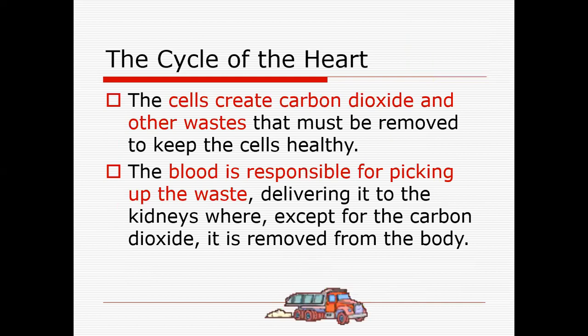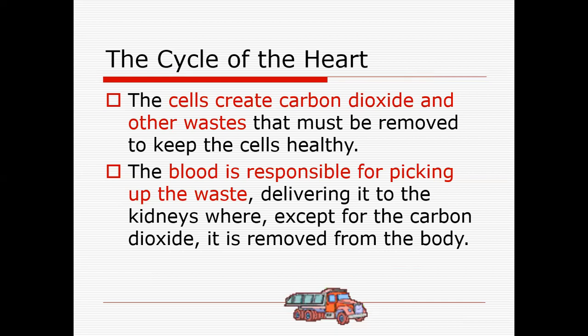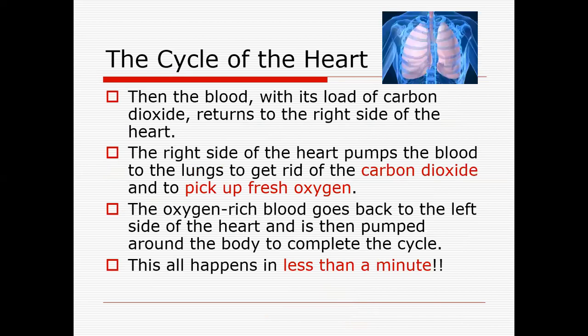As already discussed, cells need ATP to perform their functions. Cells get ATP when glucose is broken down in the presence of oxygen, producing carbon dioxide, water, and ATP. That carbon dioxide is waste for the body and must be removed. The carbon dioxide is dumped into the blood, which carries it to the lungs. When we exhale, the carbon dioxide moves out of the body. Blood is responsible for picking up waste and delivering it to the kidney — all waste except carbon dioxide, which is sent to the lungs.